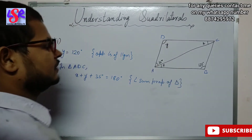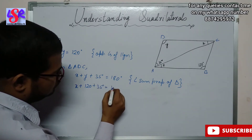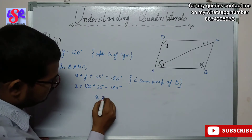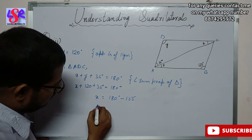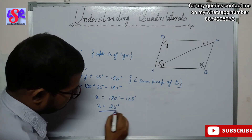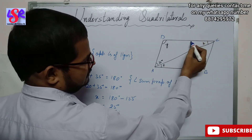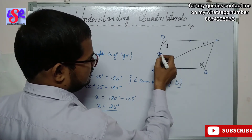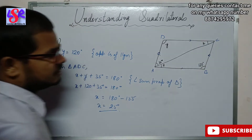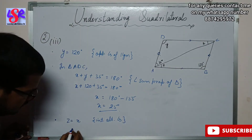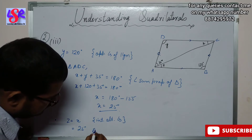Placing Y as 120: X plus 120 plus 35 equals 180 degrees. So X equals 180 minus 155, giving X equals 25 degrees. Then Z equals X by interior alternate angles, since opposite sides of the parallelogram are parallel. So Z equals X equals 25 degrees.